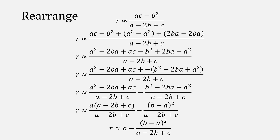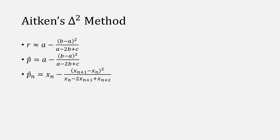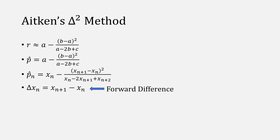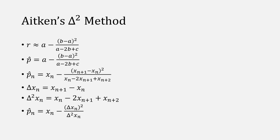This will give us this form for r. We know that r is approximately equal to this expression, and what that expression is actually equal to we'll call p-hat. If we substitute our x's back into this expression, there's something special about the numerator and the denominator. The numerator is the forward difference, and the denominator is the second order central difference. This is where we get Aitken's delta squared method from.